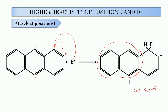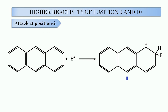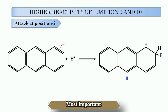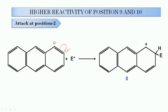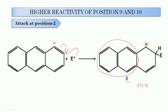Similarly, when attack occurs at position 2, this pi bond shifts toward this side, this carbon acquires a partial negative charge, and this carbon acquires a partial positive charge. So the electrophile attacks on this carbon and the carbocation — which is the most stable carbocation out of various resonating structures — gets formed. Again, we have one naphthalene ring intact with the most stable carbocation, and the resonance energy is equal to 255 kJ/mol.